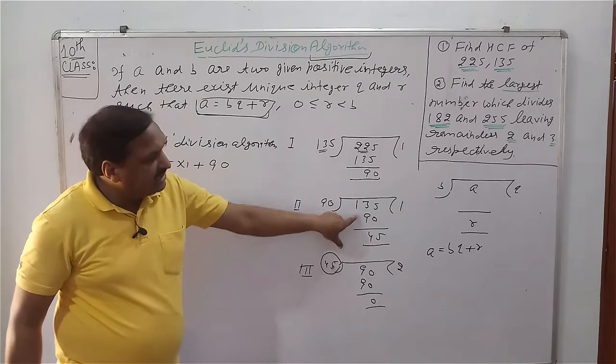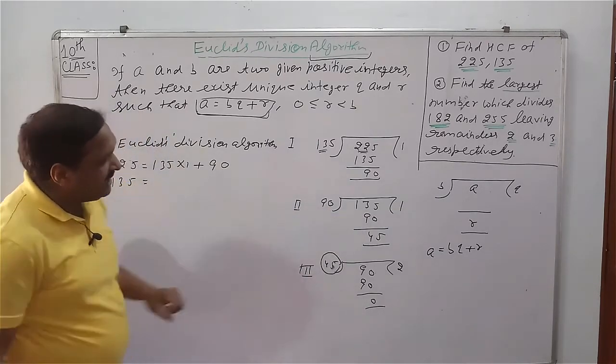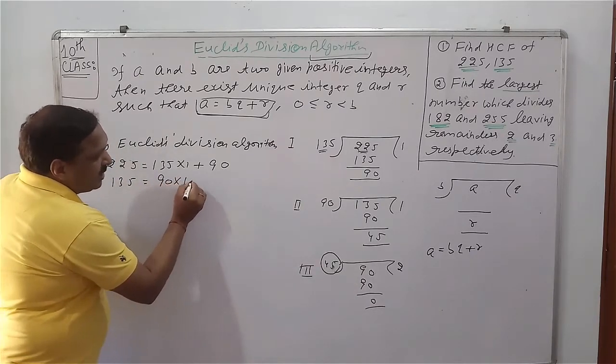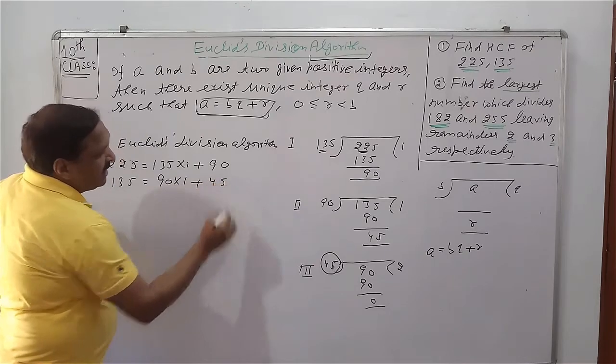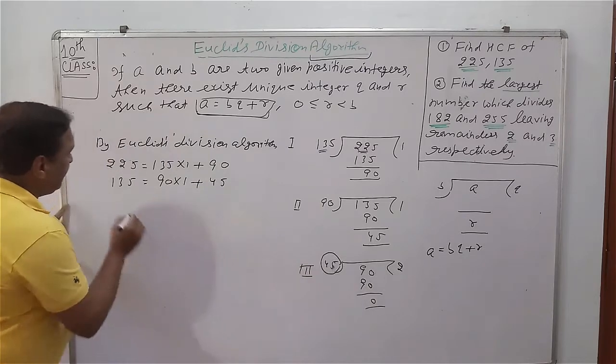So BQ means B multiply Q, 135 multiply 1 plus R, and remainder is 90. In second step, we can say now A is 135, B is 90,